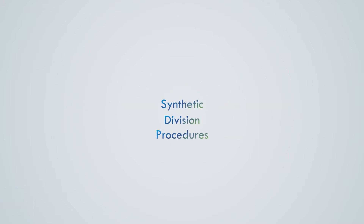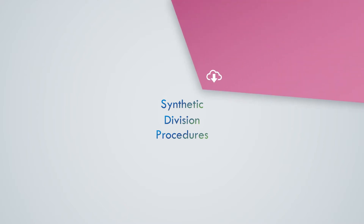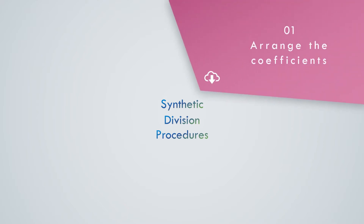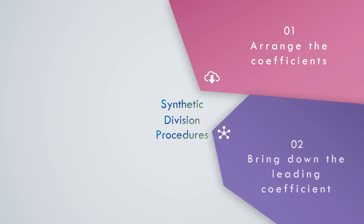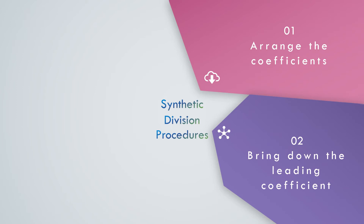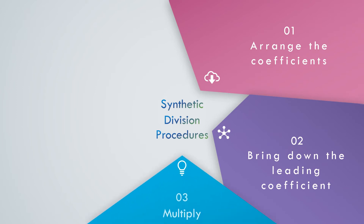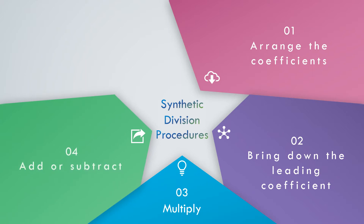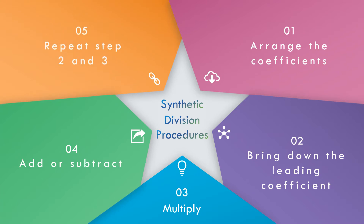What are the procedures in dividing polynomials using synthetic division? The first step, we need to arrange the coefficients from highest exponent to lowest exponent. After arranging, we bring down the leading coefficient. The third step, we multiply. The fourth step, we add or subtract. And the last step, we repeat steps 2 and 3.